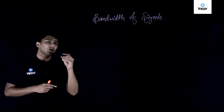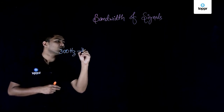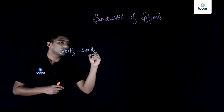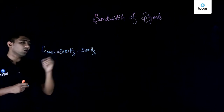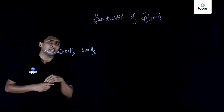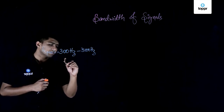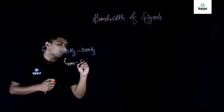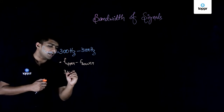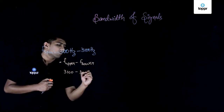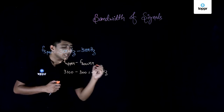For example, the frequency range of a speech signal is 300 hertz to 3100 hertz. To find out the bandwidth of a speech signal, we subtract the upper frequency minus the lower frequency: 3100 minus 300 gives you 2800 hertz. So 2800 hertz will be the bandwidth of your speech signal.